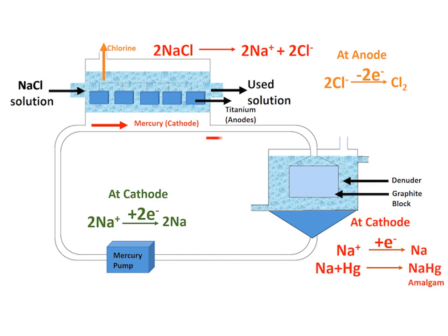Reduction of cations results in sodium metal, which then combines with mercury forming amalgam. The amalgam flows to the lower chamber, where sodium from amalgam reacts with water resulting in sodium hydroxide and hydrogen gas, both of which are collected separately.